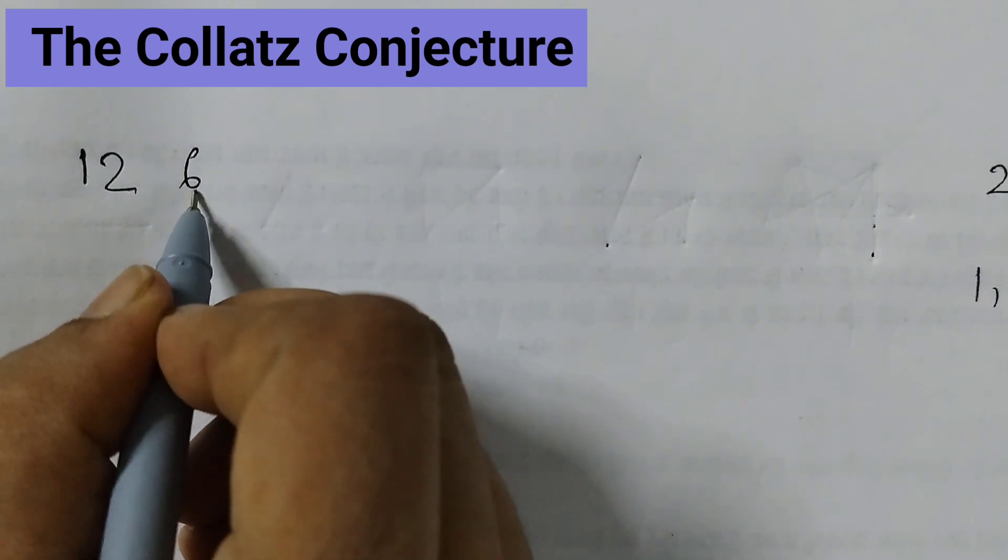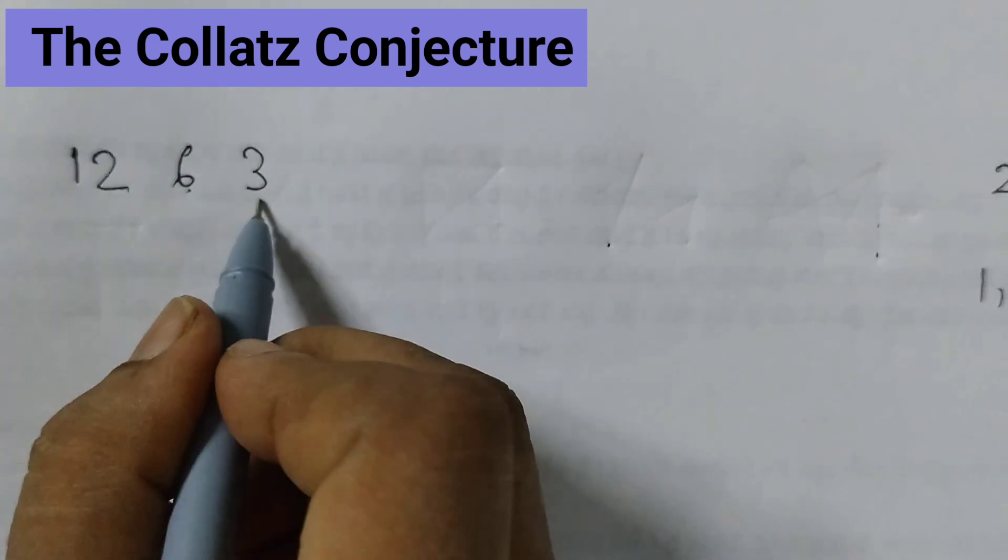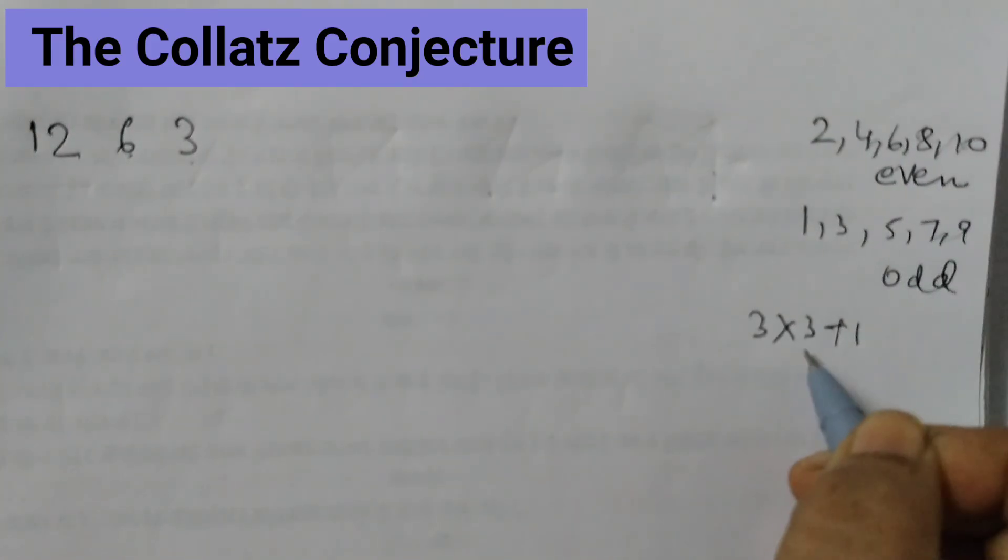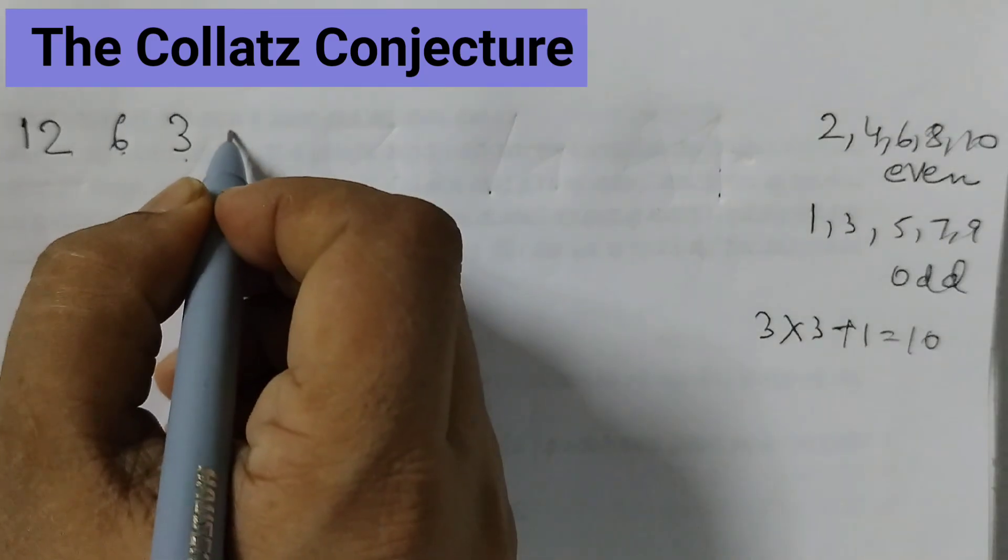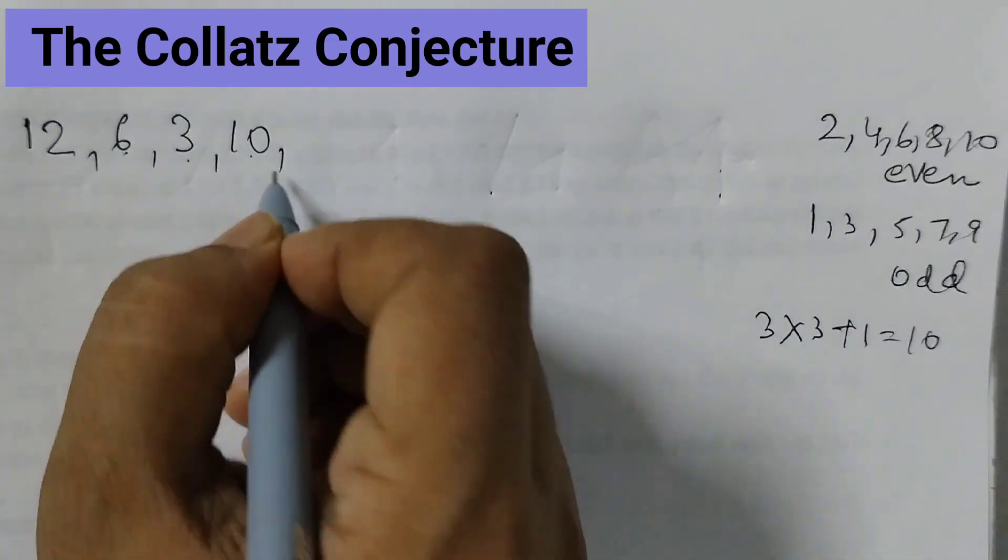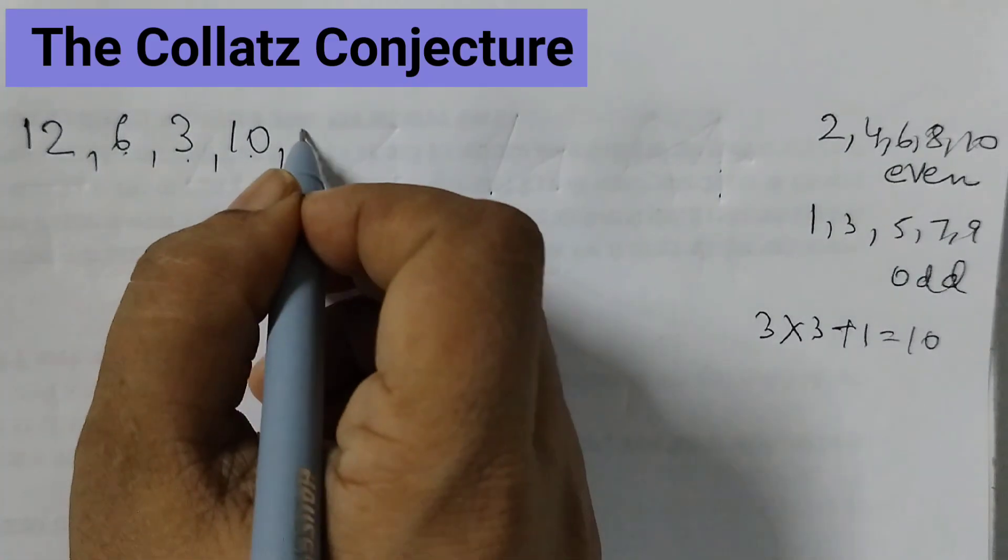6 is an even number, take half of this. That would be 3. 3 is an odd number, so we will multiply by 3 and add 1. 3 times 3 is 9 plus 1 is 10. So the next number is 10. Now 10 is an even number, take half of this. That is 5.